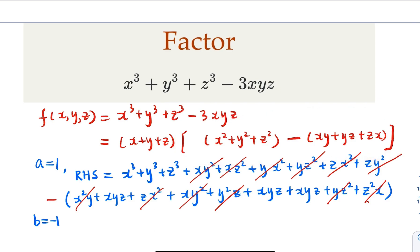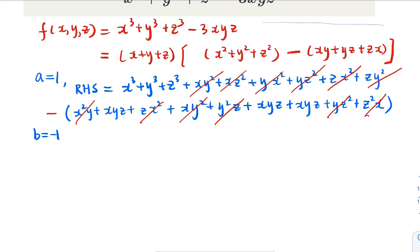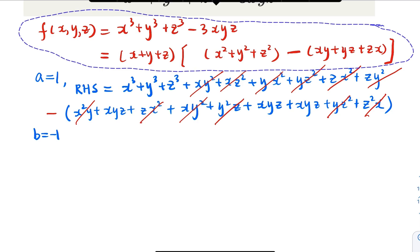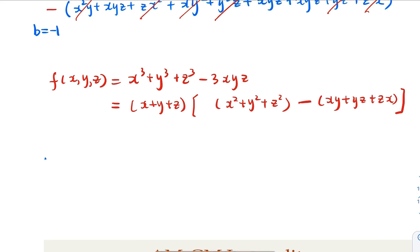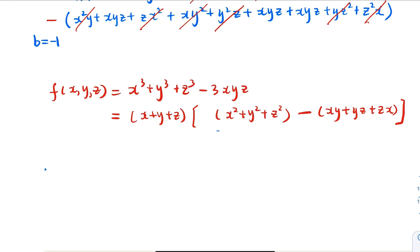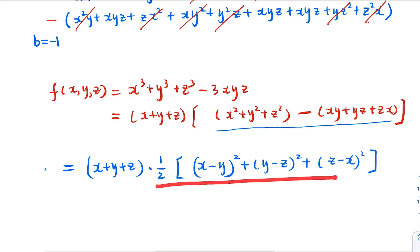So we have found a equals 1 and b equals negative 1. Now look at this term — you can actually complete the square. This is a very common form. What we have is: f(x, y, z) equals x plus y plus z times one-half of (x minus y) squared plus (y minus z) squared plus (z minus x) squared. For real numbers, this is non-negative. So a byproduct of this factorization is that if x, y, z are non-negative, the whole thing is non-negative.